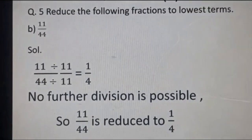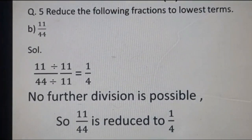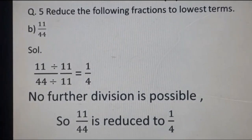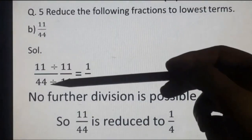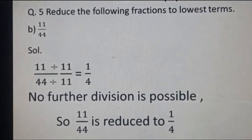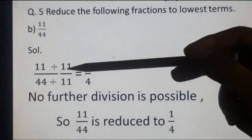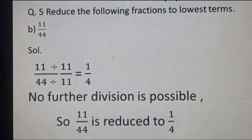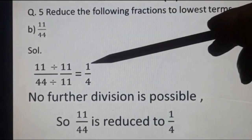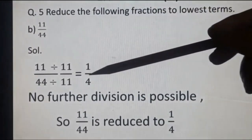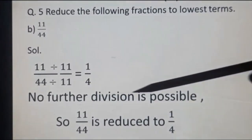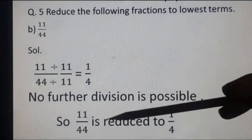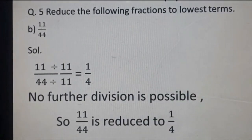Question 5, part B: 11 upon 44. We have to reduce this into lowest term. Both numerator and denominator are divisible by 11. So 11 divided by 11 gives quotient 1, and 44 divided by 11 gives quotient 4. Result: 1 upon 4. No further division is possible. So 11 upon 44 is reduced to 1 upon 4.